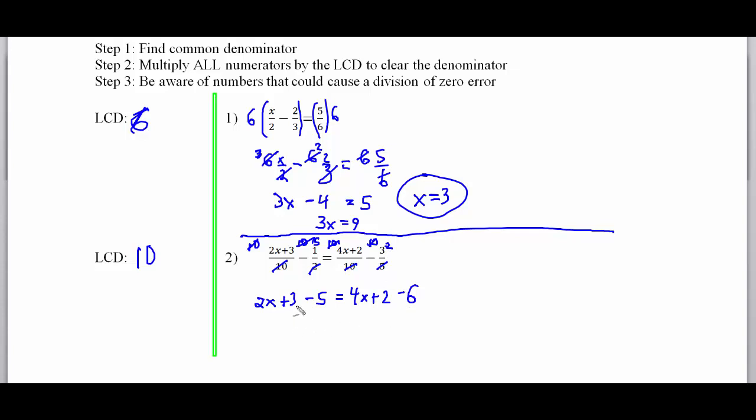Now what we do is combine some like terms here. So I've got 2x minus 2 is equal to 4x minus 4. So what we'll do next is we are going to now move the 4 and move the 2 together. So I want to move the 4x to the left, so that would give me a negative 2x. I'm going to move the 2 to the right, so I'm going to add 2 to both sides, and that's going to give me a negative 2 to this side. Divide both sides by negative 2. So the negative 2x divided by negative 2 is just x, and negative 2 divided by negative 2 is just 1.